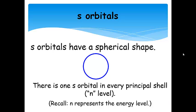S orbitals have a spherical shape. They form a sphere around the nucleus. There is one S orbital in every principal shell. So starting with N equals 1, there's a 1S orbital. Each principal shell after that also includes one, so there's a 2S and a 3S and a 4S, et cetera.